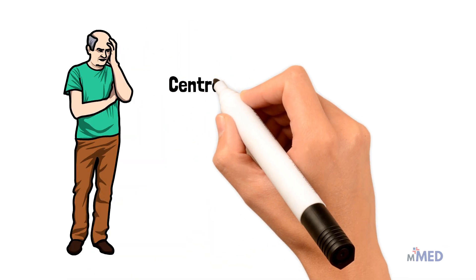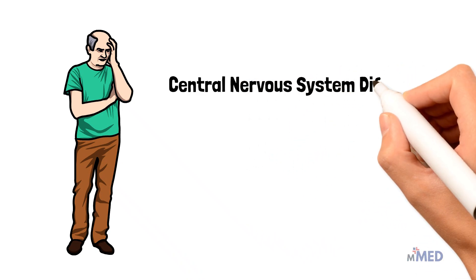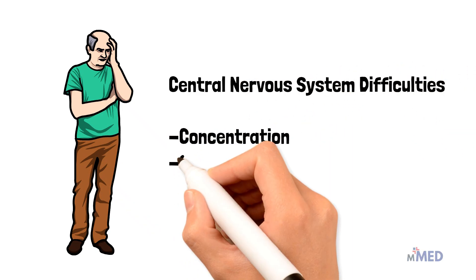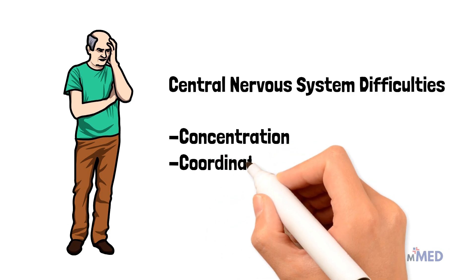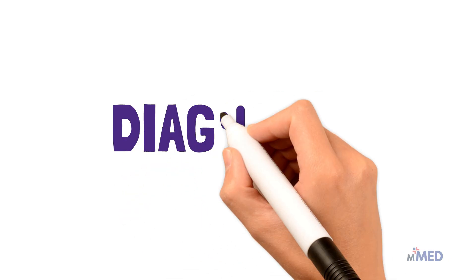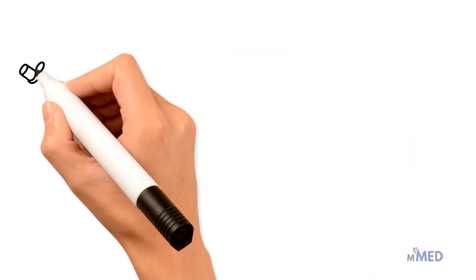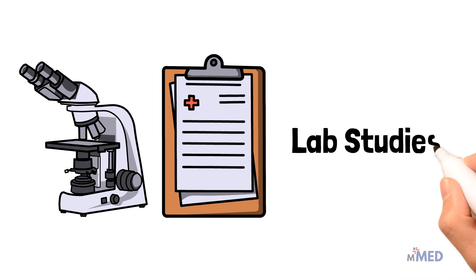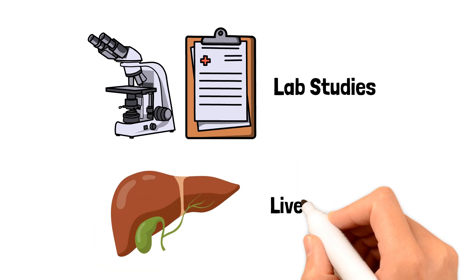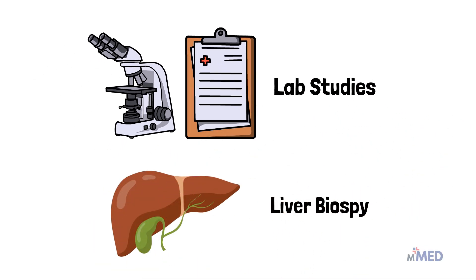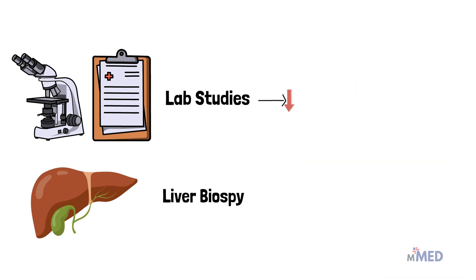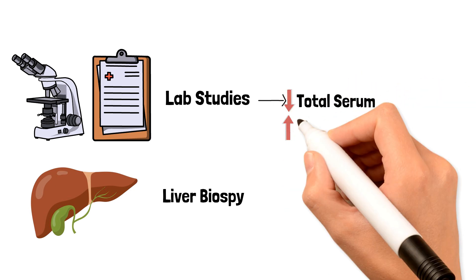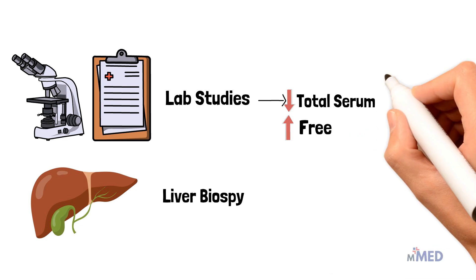Copper deposits in the central nervous system can lead to neurological symptoms like concentration, coordination, and speech difficulties. Evaluation of Wilson's disease is done with lab studies and a liver biopsy. Labs will reveal low total serum ceruloplasmin, increased free copper, and hemolytic anemia.